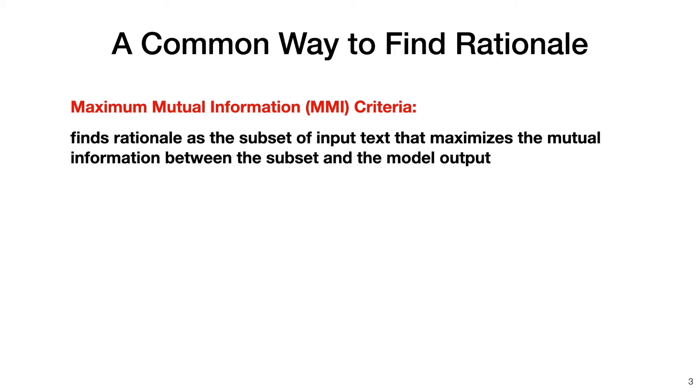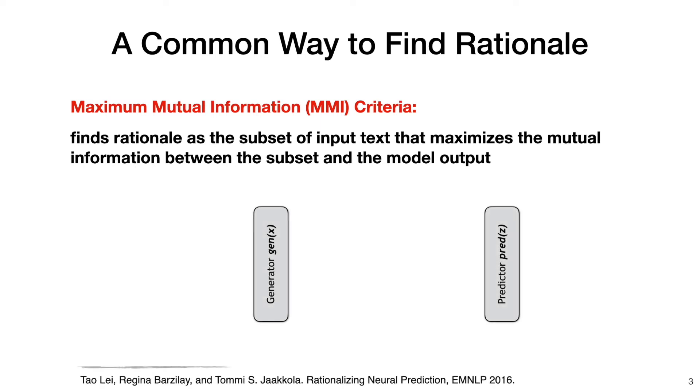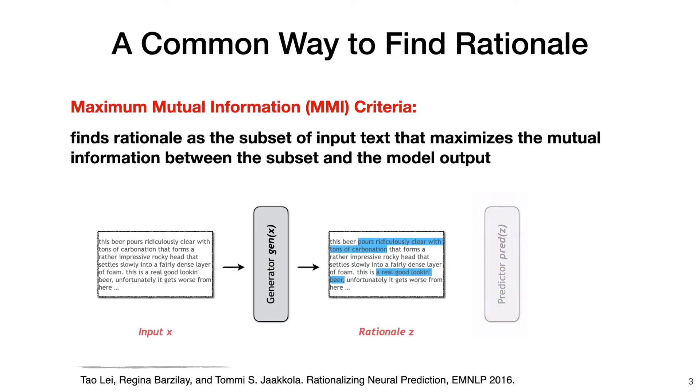In other words, the selected rationale should predict the output as accurately as possible. One existing approach to finding such MMI rationales is by the following game theoretic framework, where there are a generator and a predictor. The goal of the generator is to generate rationales from the input text, and the goal of the predictor is to predict the output based on the selected rationales. Both players are trained jointly to maximize the prediction performance.